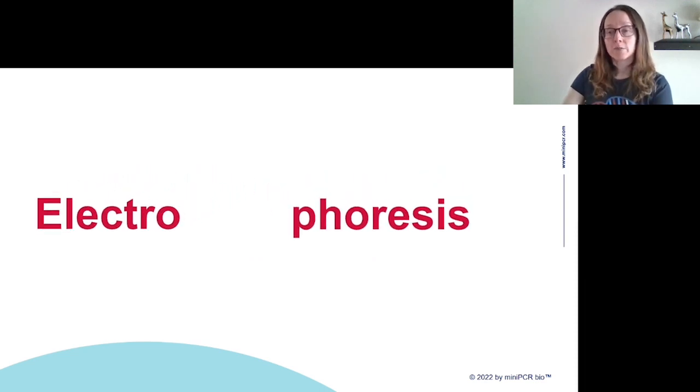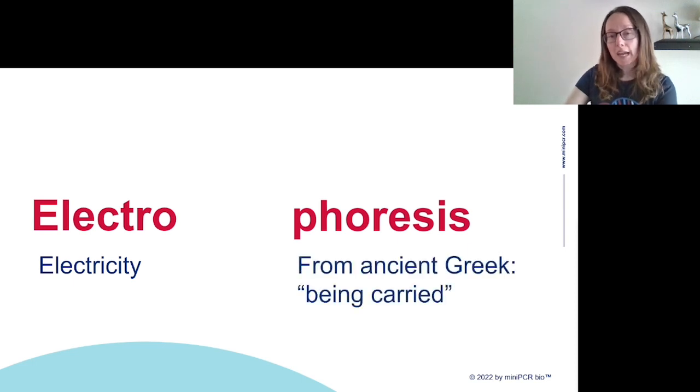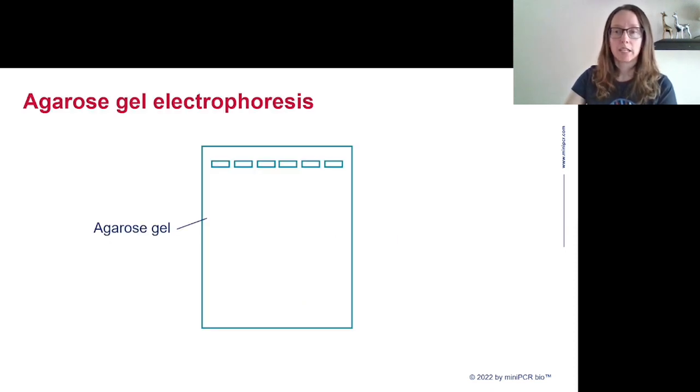We can then use electrophoresis to separate DNA fragments based on their size to distinguish C. crossleyi DNA from DNA belonging to other lemur species. If we break the word electrophoresis down, it'll tell us how we're going to be doing that. Electro comes from electricity, and phoresis comes from ancient Greek and means being carried. So we're going to use electricity to carry DNA through our gel and separate it by size.